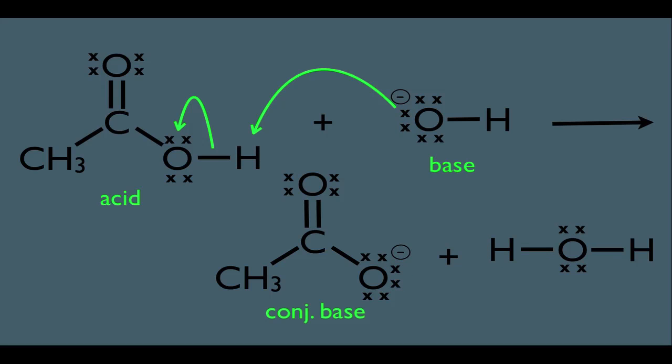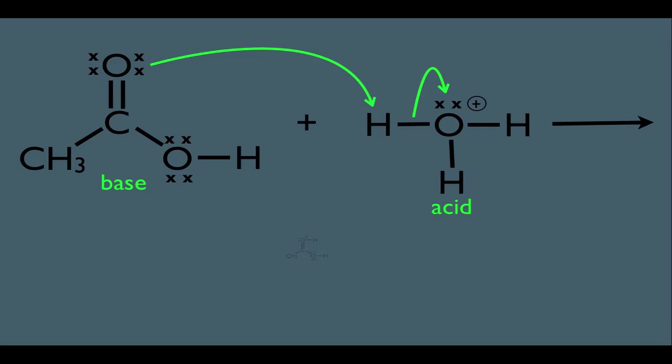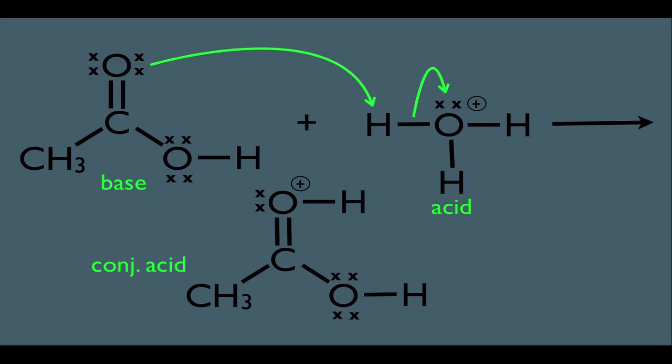Carboxylic acids can also act as bases. If the carboxylic acid plays the role of base, then the other molecule plays the role of acid. For this to happen, that acid must be more acidic than the carboxylic acid — in other words, it should have a lower pKa. When the carboxylic acid behaves as a base, it's the oxygen that's doubly bonded to the carbon that gets protonated.